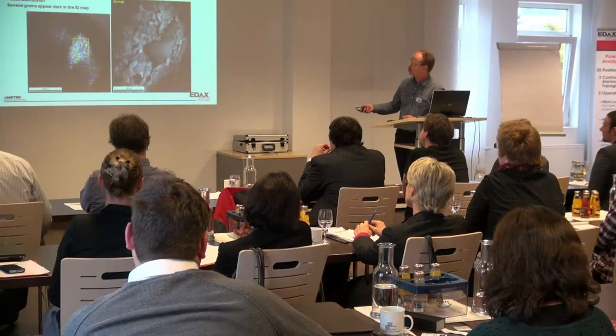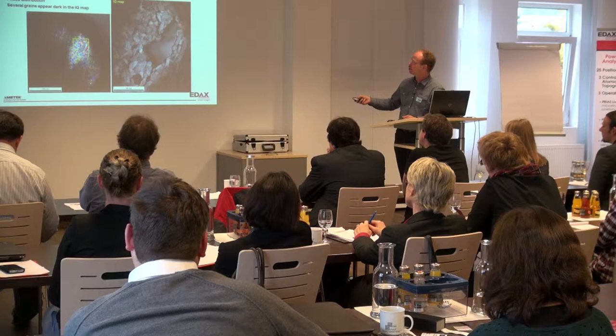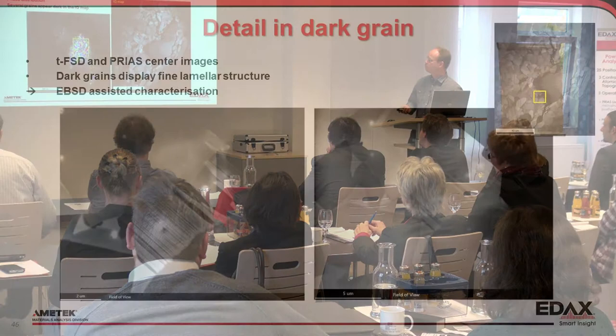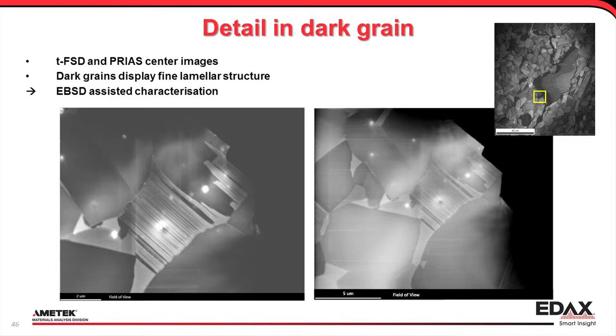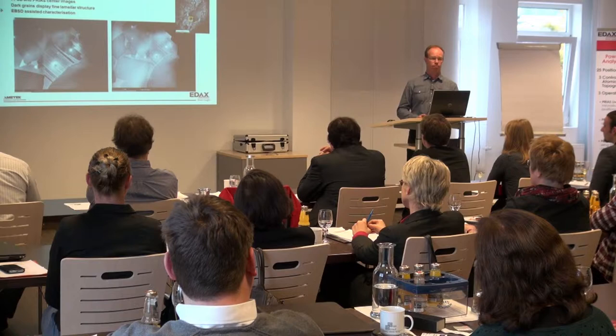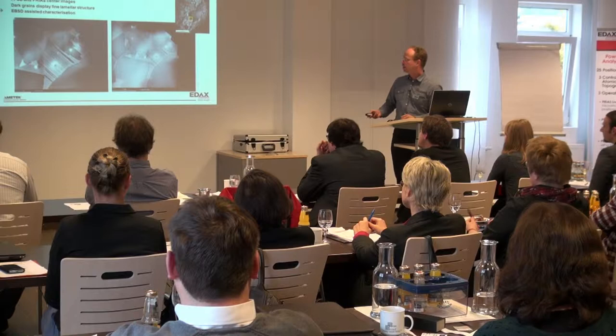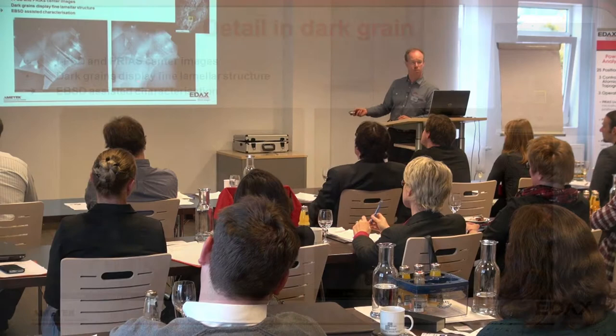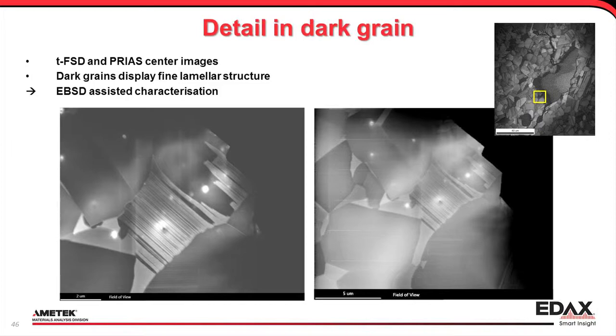These grains are nice, but there are those grains that are really dark and don't produce anything. These are the ones I'm interested in. If we zoom in on this grain — what happens in those points is that this dark grain, right next to the hole, is full of very fine lamellae. They are nanometer-scale lamellae. This is a transmission FSD image; this is a Prius image from the center, so you get quite similar contrast types. And all these dark grains have this fine lamellae structure.